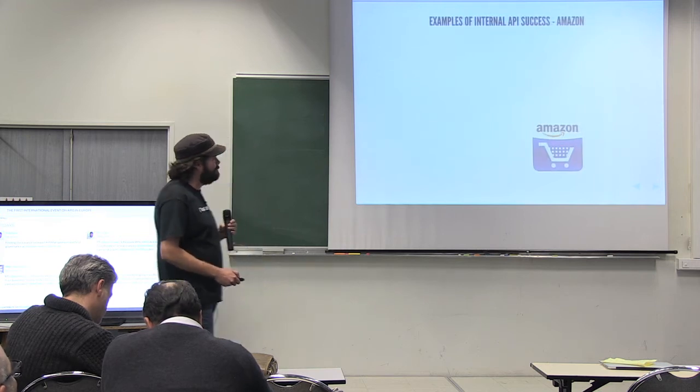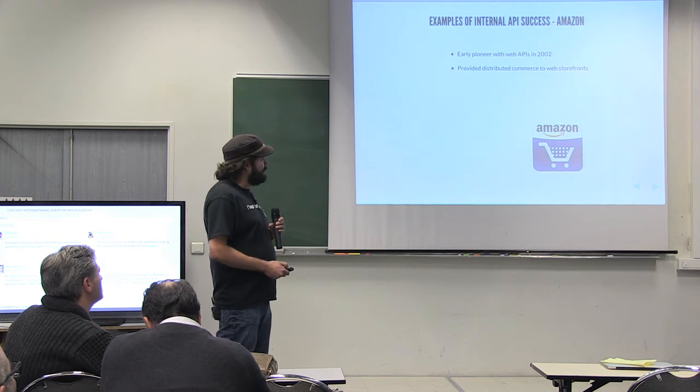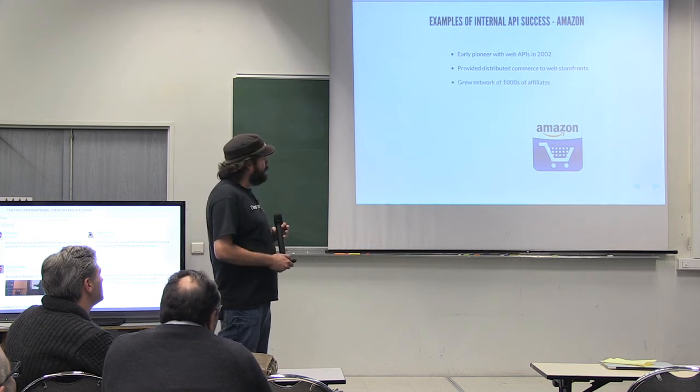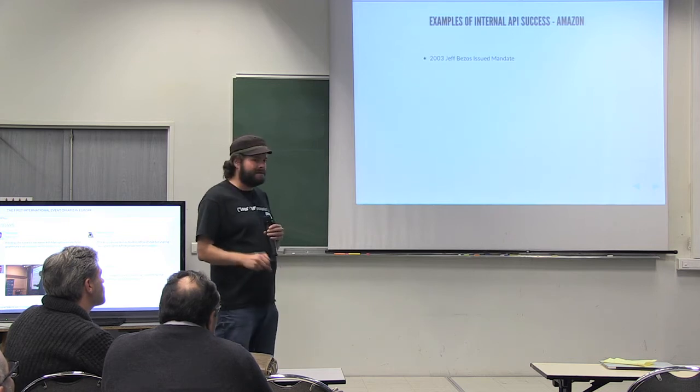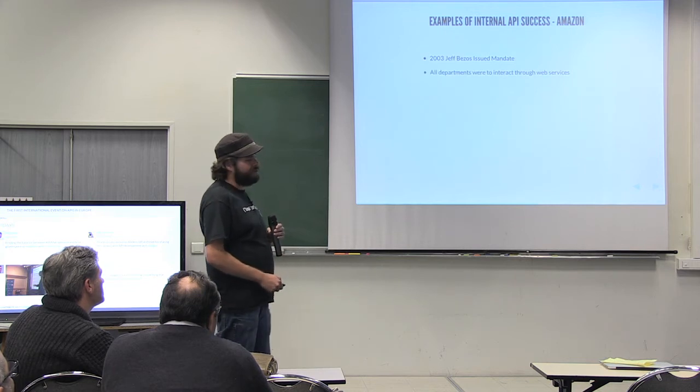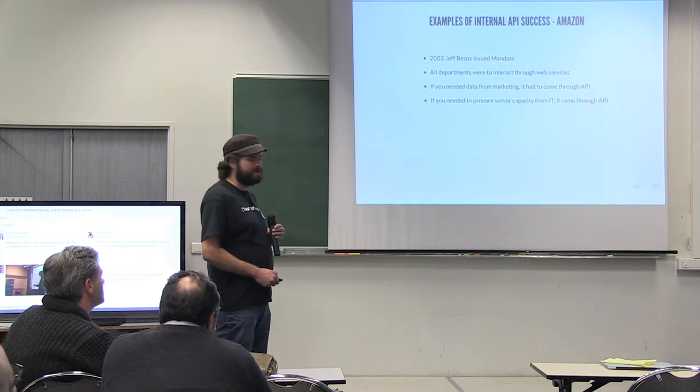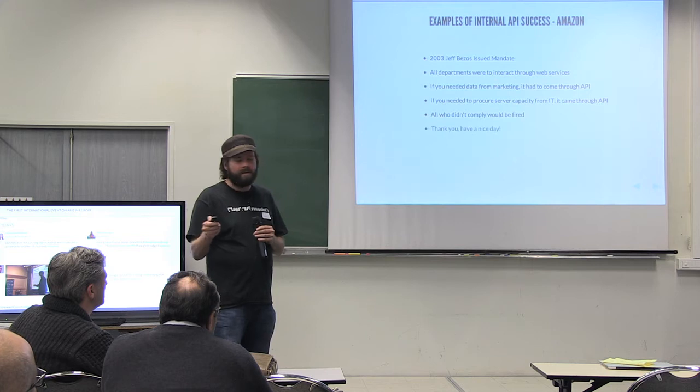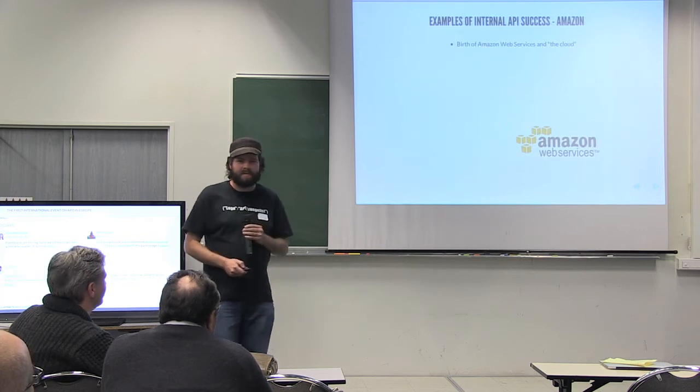So examples of internal API success. Amazon. It's my favorite one. So they're the early pioneer of web APIs in 2002. They provided e-commerce to web storefronts. And they saw the power of that in building their affiliate network with APIs. And grew a network of 1,000 affiliates. Saw the potential of web APIs early on. But this really isn't internal APIs. This is external APIs. But Jeff Bezos issued a mandate, 2003-2004. All departments were to interact through web services. If you needed data from marketing, it had to come through an API. If you needed to procure server capacities from IT, it came through an API. All who didn't comply would be fired. Have a nice day.